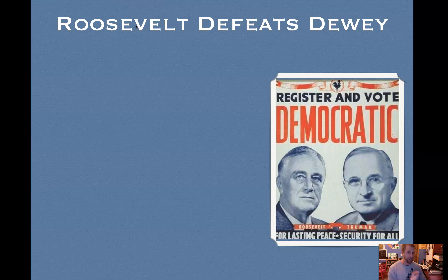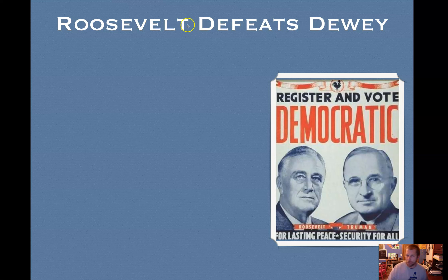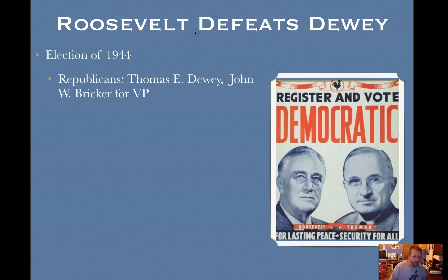The war is going well. We left off with D-Day — the Allies had invaded France with the British, the French, and the Canadians. They established their beachhead, did a sweeping action, and were pushing towards Paris. So it worked really well. And so the election of 1944 is coming up. The Republicans, wanting to oust Roosevelt after three terms — who's now running for a fourth term — nominate Thomas E. Dewey and John W. Brecker for their vice president.